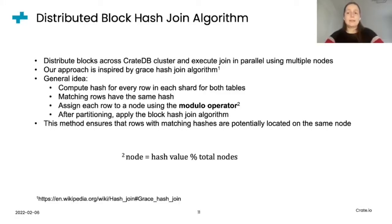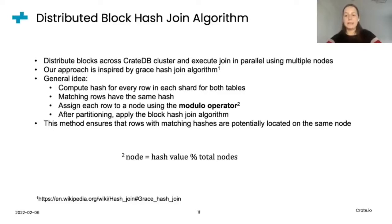Up to now, I've presented the idea behind the block hash join algorithm that runs on a single node. The next step is to make it run in a distributed setting. The idea is to distribute blocks across the cluster and execute joins in parallel using multiple nodes. Our solution to this problem is inspired by the grace hash join algorithm, which consists of several steps. The first step is to compute a hash for every row in each shard for both tables in a way that matching rows have the same hash. Then we distribute the rows across the cluster by assigning a row to a node using the modulo operator as presented in the slide.